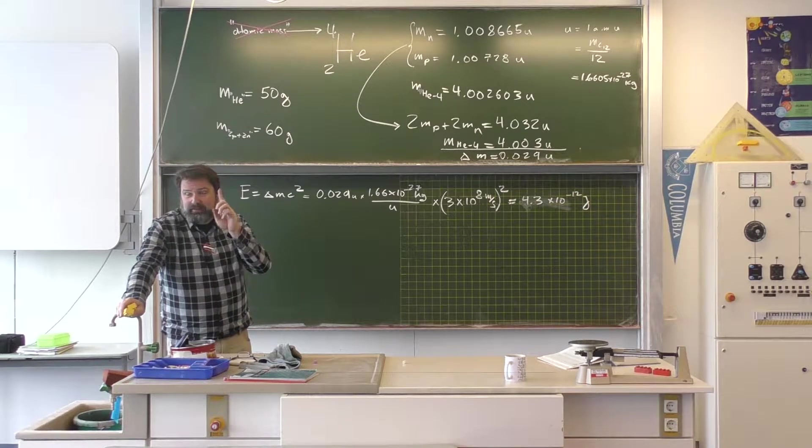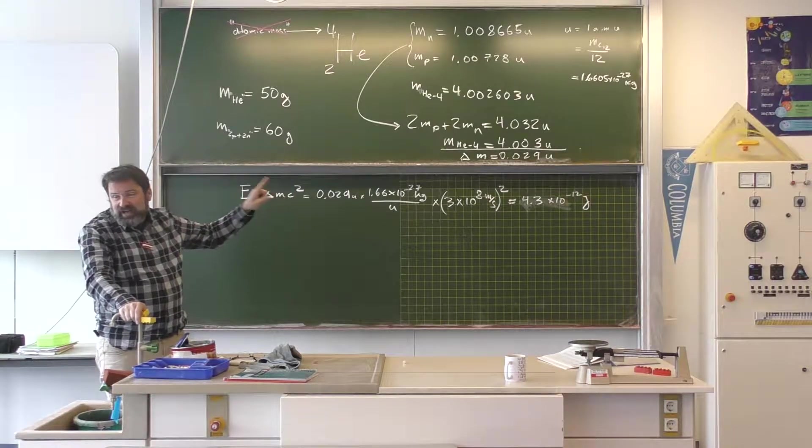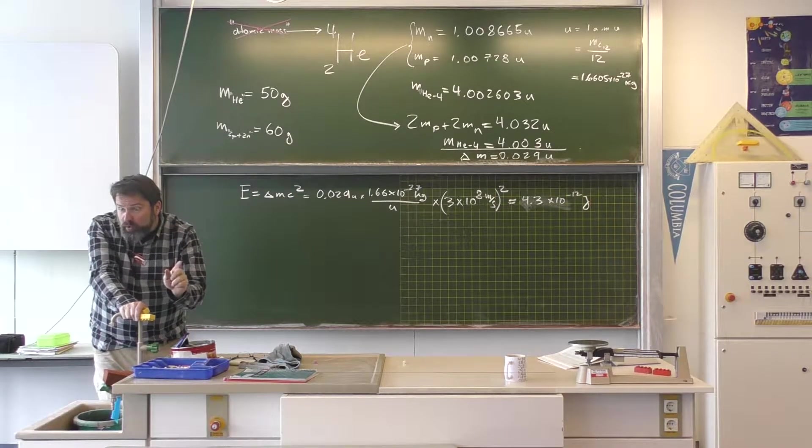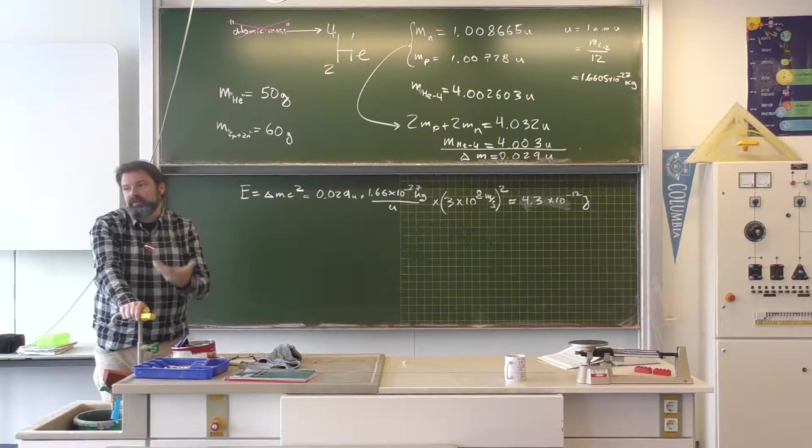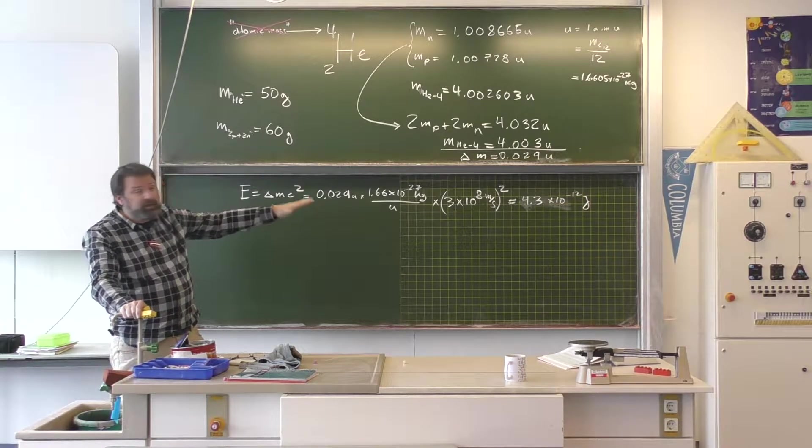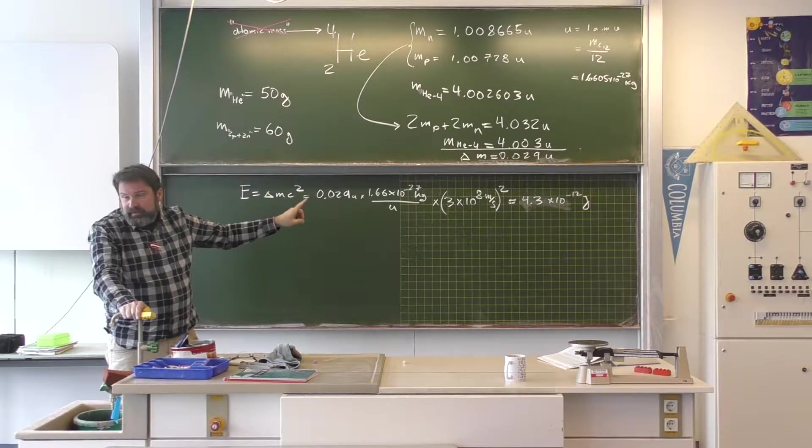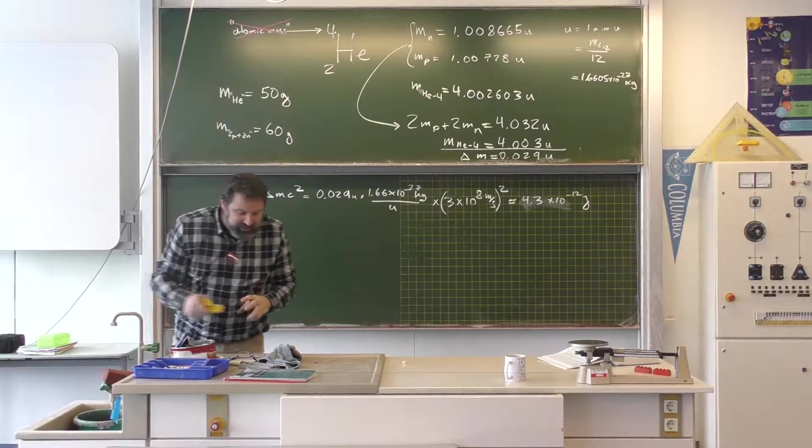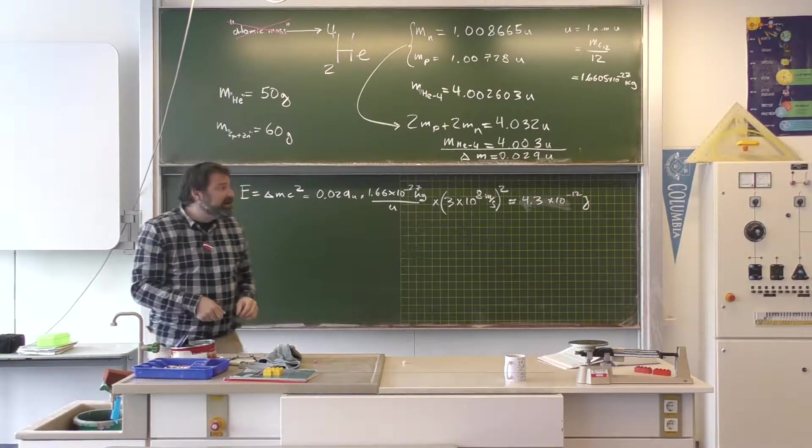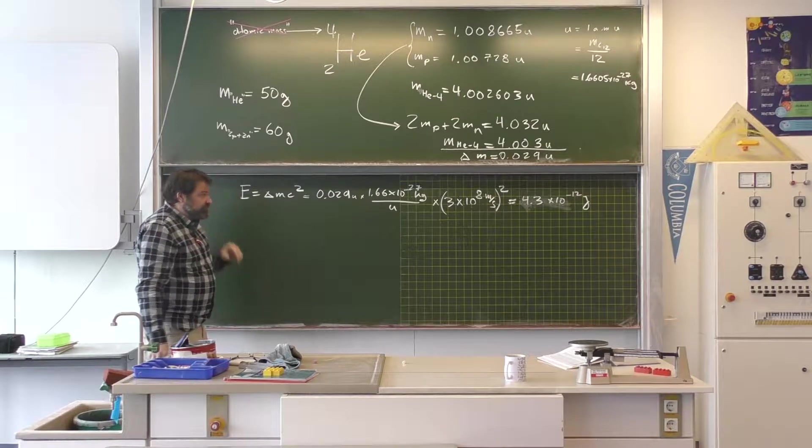Avogadro's number, right? Because that's the number of particles in one mole. In this case, not the little cute animal with the big paws, but for hydrogen to be one gram of hydrogen has a mole of hydrogen atoms. 6 times 10 to the 23. Aha! So maybe it's a better idea to think about how much energy is released in one mole of hydrogen, I'm sorry, one mole of helium being created.